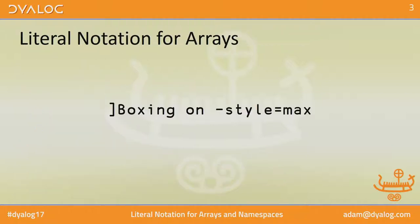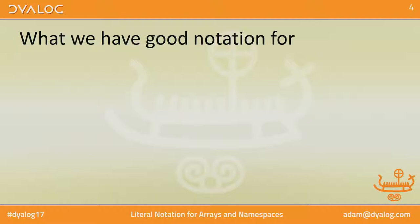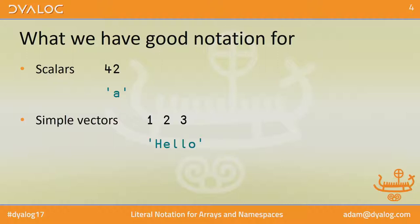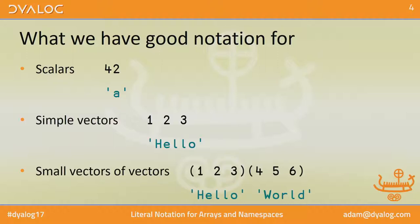Because we're going to deal with more advanced arrays, I'm turning on boxing to the maximum level so we can see what's really going on. Let's go back to what we have good notation for: scalars, simple vectors, small vectors of vectors. If it gets any more complicated than that, it's too much to write on a single line — you have to start making multiple statements to construct your data.